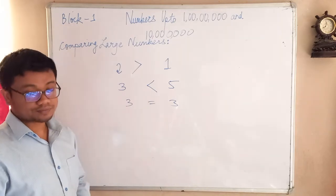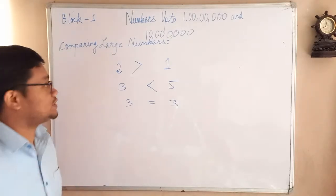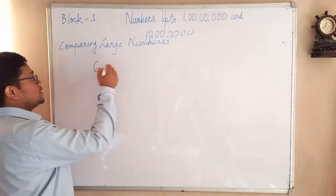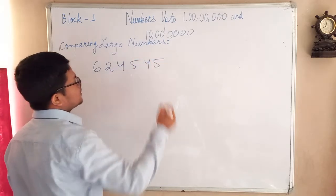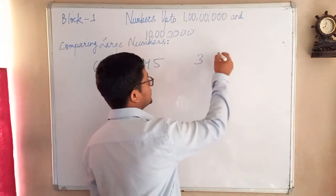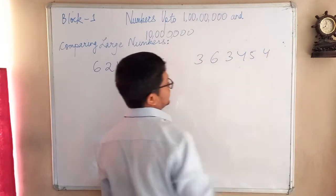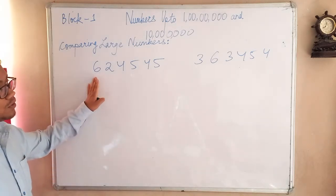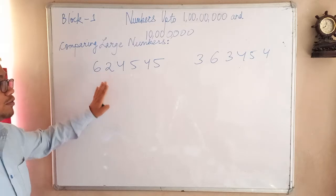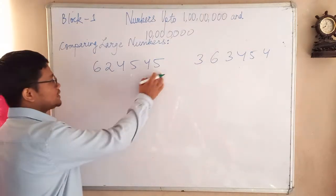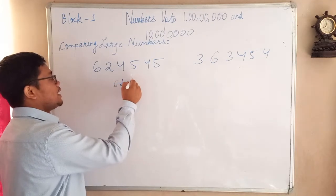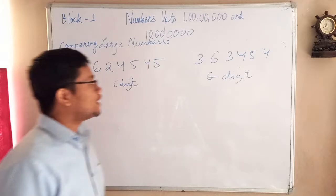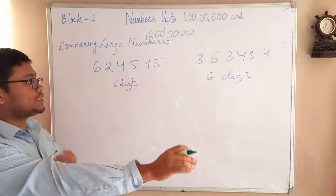Now I will be teaching you how to compare very large numbers. Just imagine if I give you a six-digit number like 1, 2, 3, 4, 5, 6 — this is one six-digit number — and again another six-digit number 1, 2, 3, 4, 5, 6. Amongst these numbers, what you have to do first is see how many digits both numbers have. This is a six-digit number and the other one is also six digits.